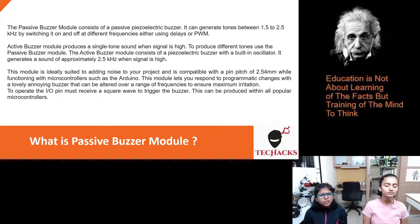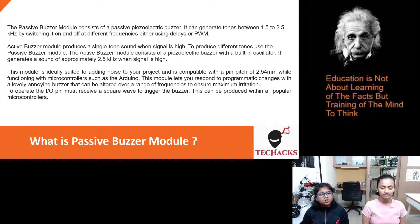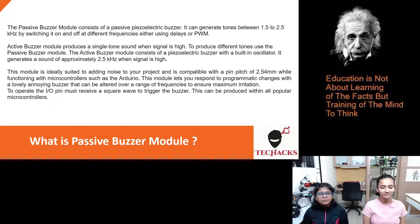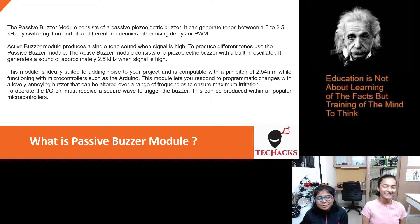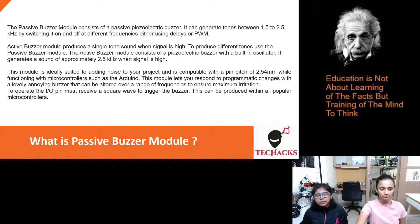This module is ideally suited to adding noise to your project and is compatible with a pin pitch of 2.54 mm while functioning with microcontrollers such as the Arduino. This module lets you respond to programmatic changes with a buzzer that can be altered over a range of frequencies. To operate, the IO pin must receive a square wave to trigger the buzzer, which can be produced within all popular microcontrollers.